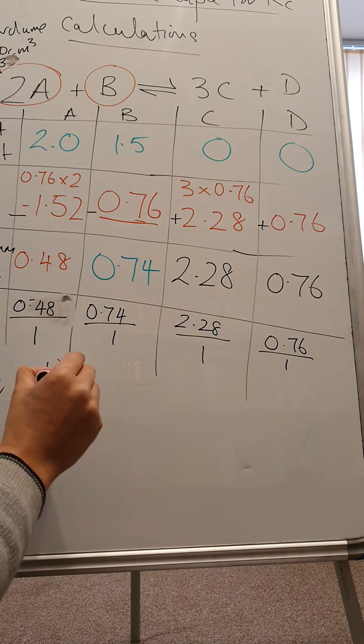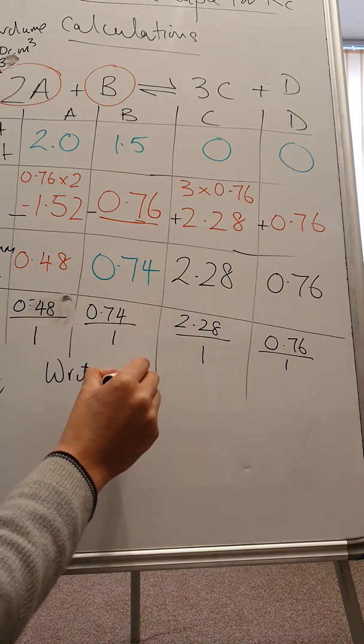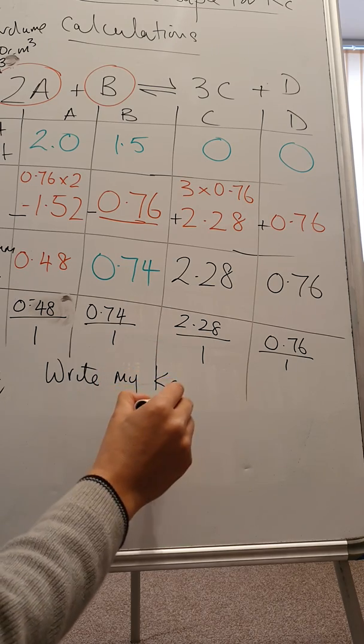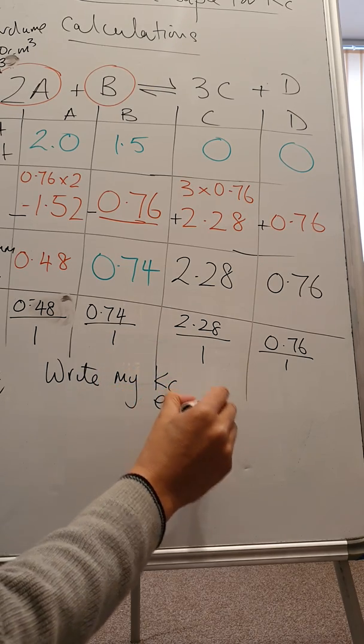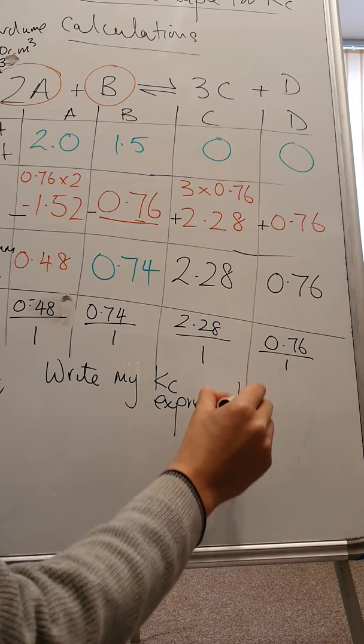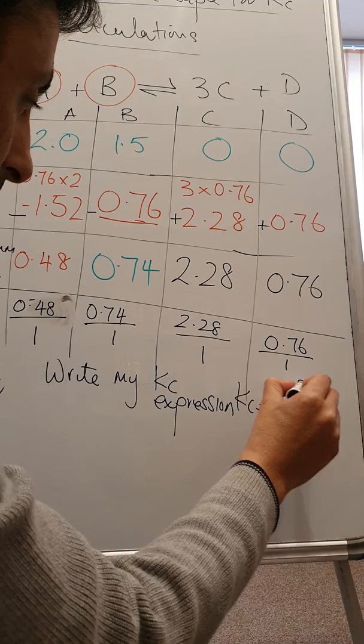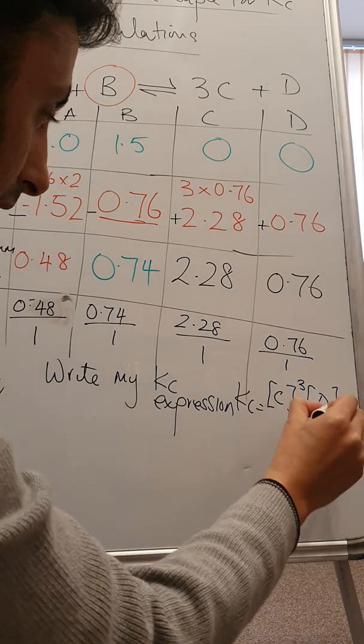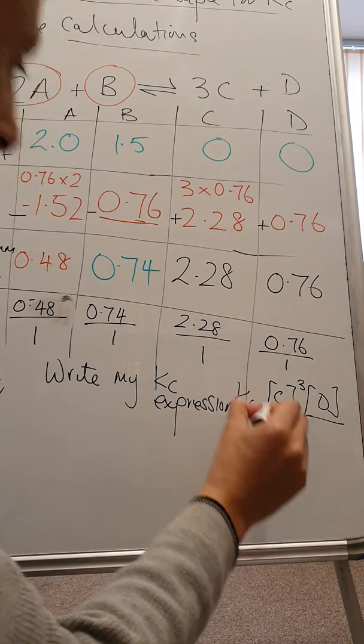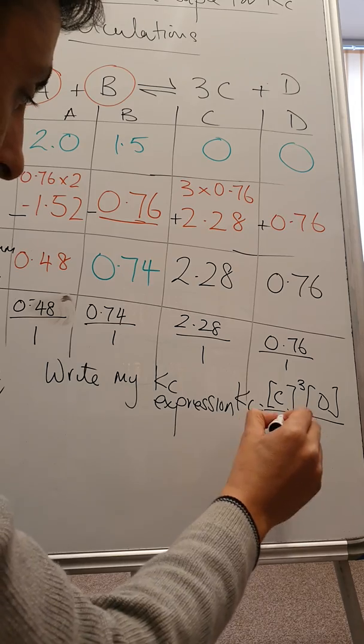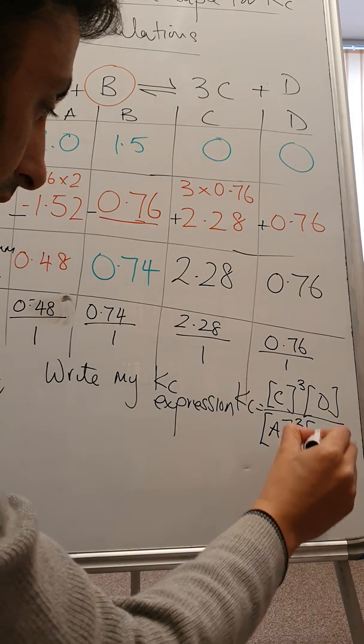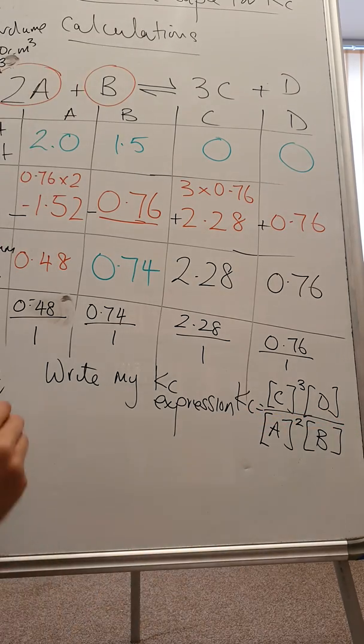I'm going to write my KC expression. KC equals concentration of C cubed times D over concentration of A squared times B.